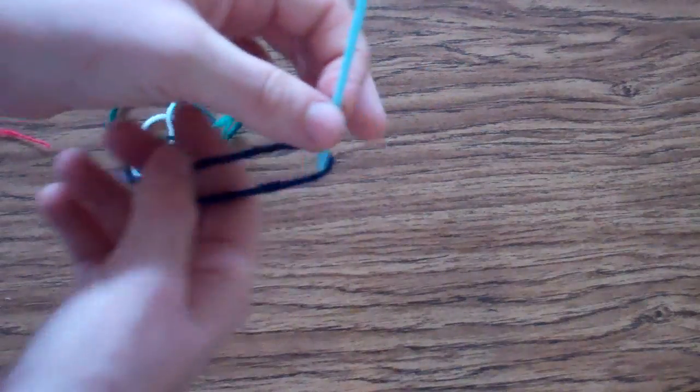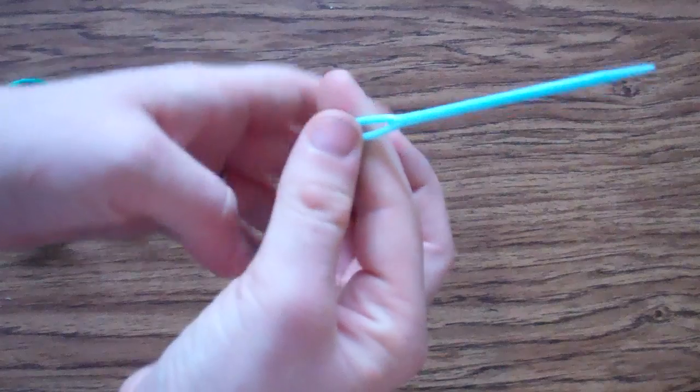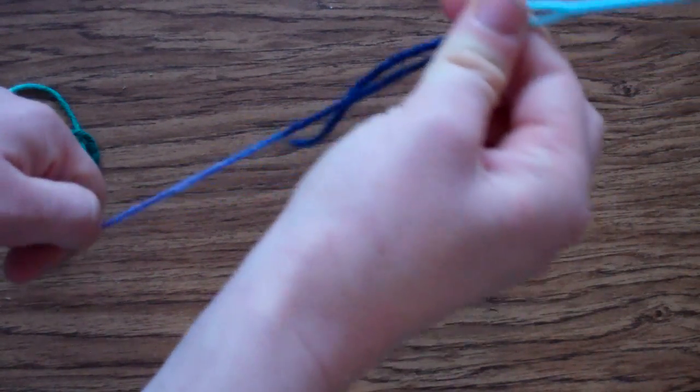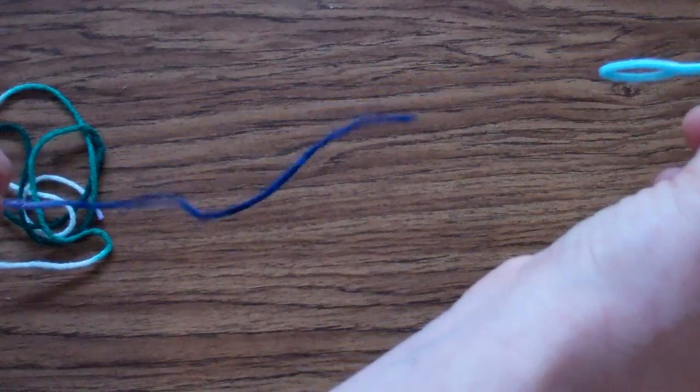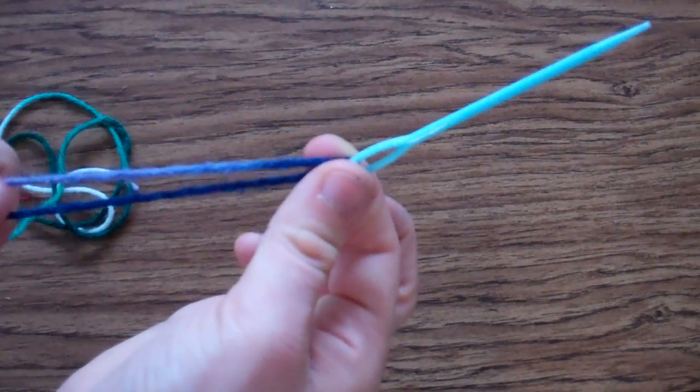Make sure when you hold your needle when you're weaving that you pinch that very end of the needle. Then when you're weaving and you have to tug on the yarn, it's not going to come off the needle. If I hold the needle up here, you can see it's going to come right off. Pinch your fingers over the hole in the needle as you weave and then that won't be a problem.